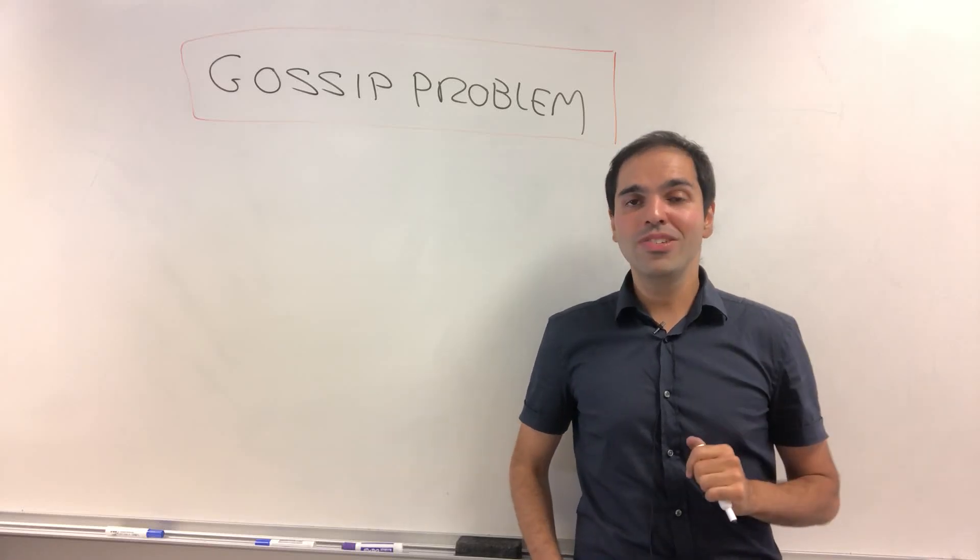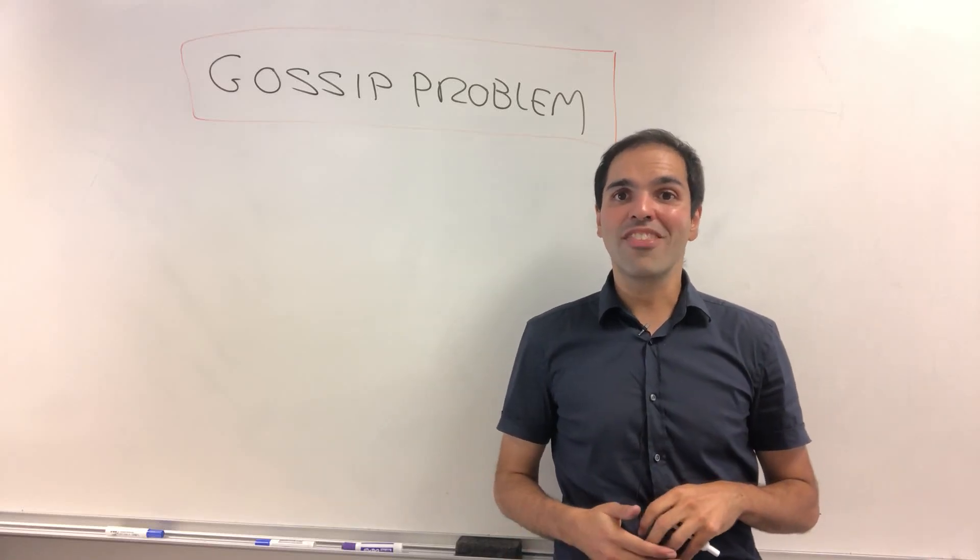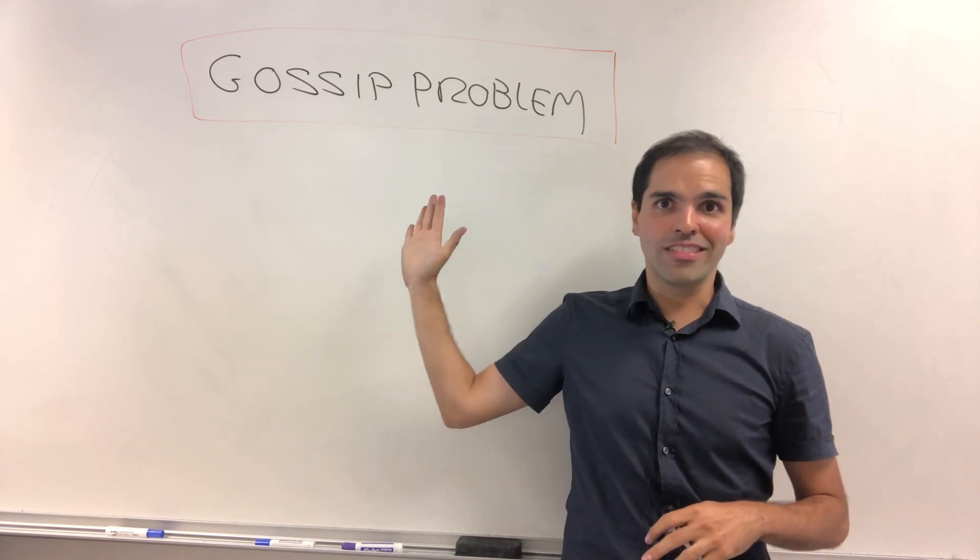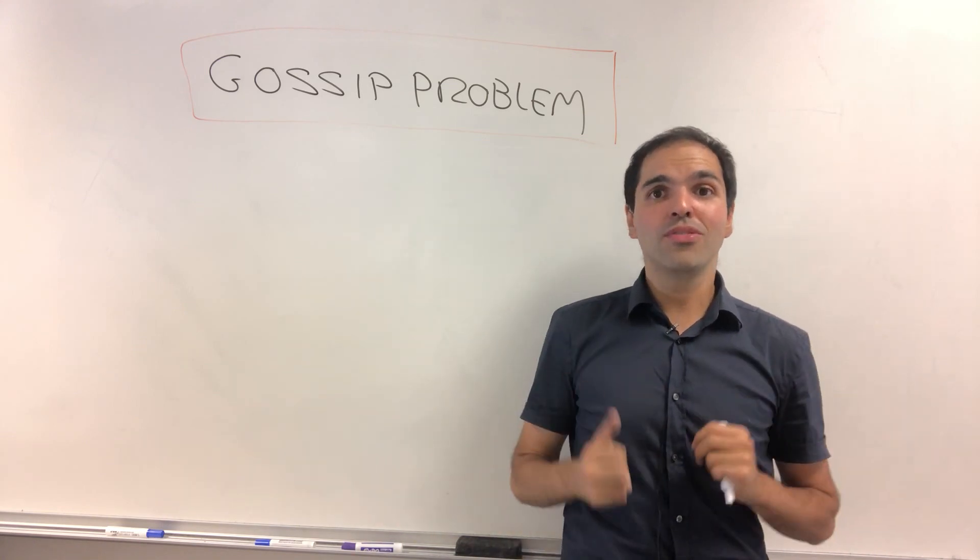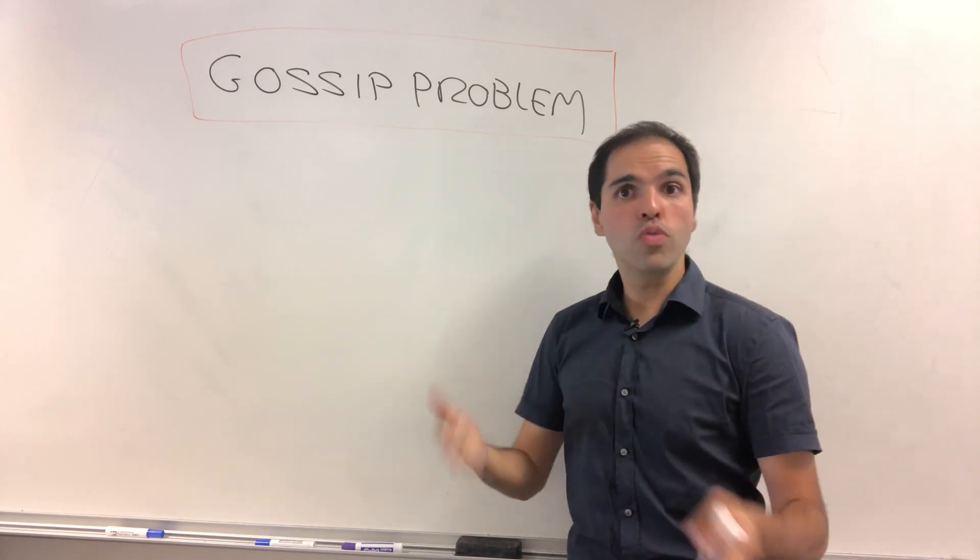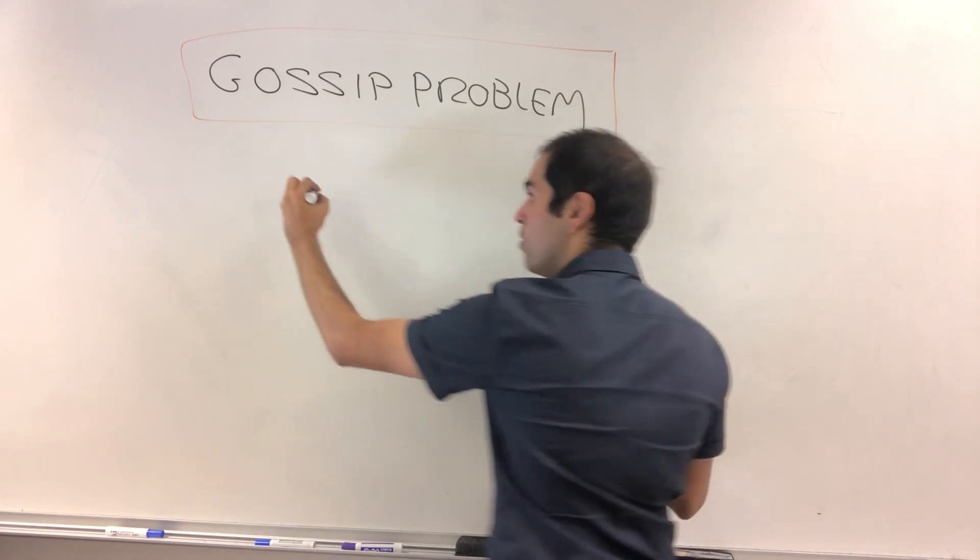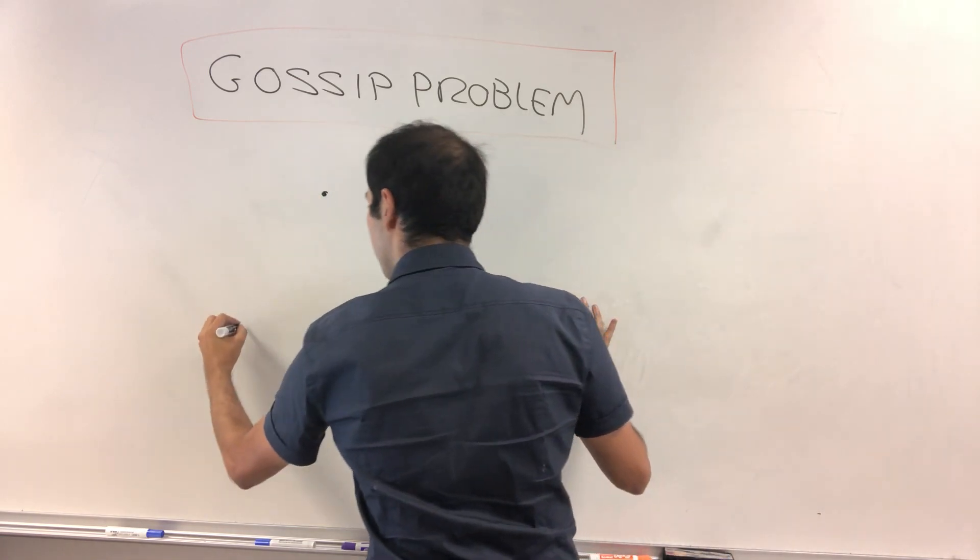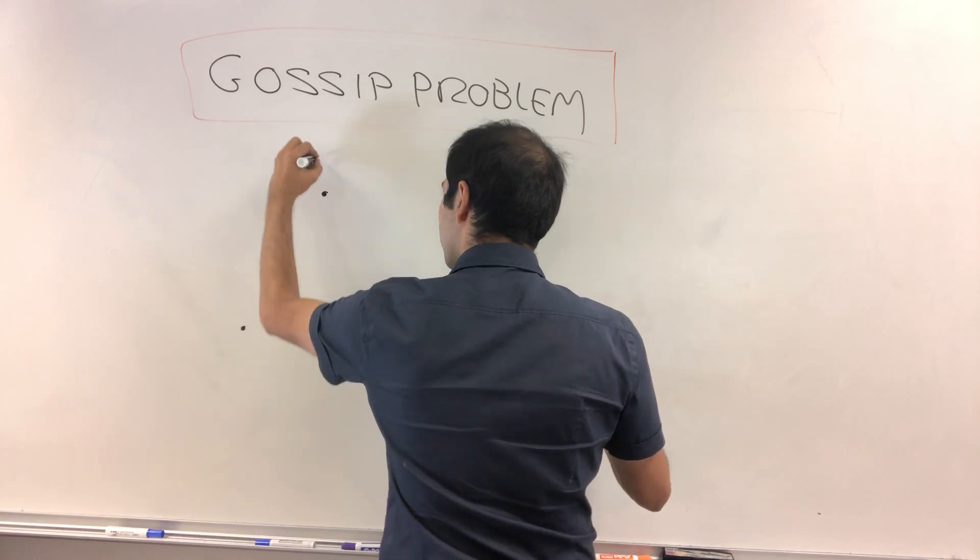Alright, thanks for watching, and today I want to cover a really cool graph theory problem called the gossip problem. And it has to do with the following, suppose you have a certain number of people, let's say here three people, one, two, three,